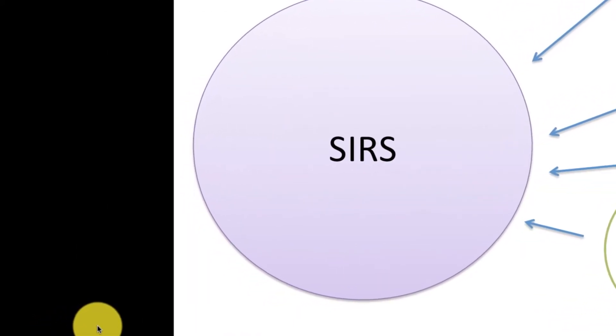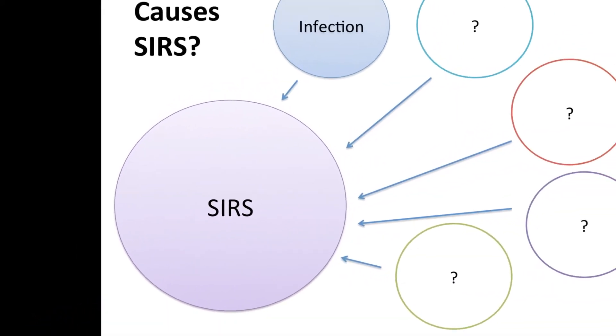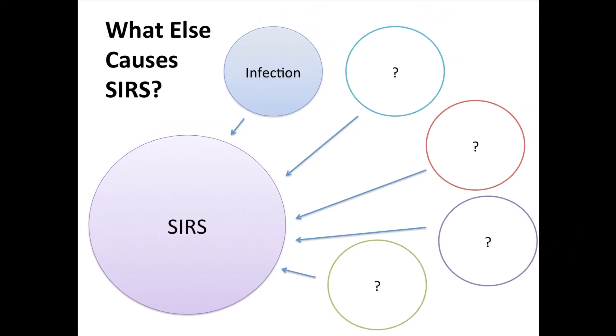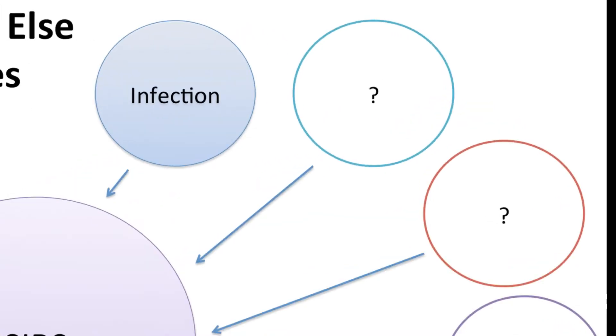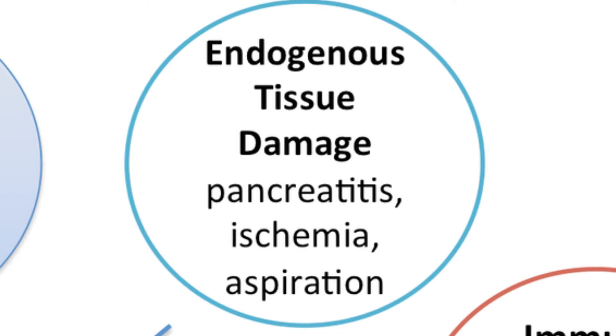So the differential for SIRS includes infection. That would be sepsis. But it's important when you're seeing somebody who you suspect has sepsis to be able to think about all those other causes for it. And fortunately, there's a relatively short list. I lump them into categories as follows. You can have endogenous tissue damage, the classic example of somebody who has pancreatitis, maybe alcoholic pancreatitis. The injury to that tissue just freaks the immune system out, and people can get a syndrome that looks for all the world like sepsis, but it's SIRS.